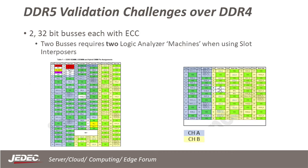There are many DDR5 validation challenges over DDR4. One of these challenges is the two 32-bit buses or subchannels versus a single 64-bit bus. From a logic analyzer perspective, this means that we need two clock domains or machines. So if we want to see traffic on both buses, we have to have one subchannel trigger the other subchannel. Each of these subchannels is on its own set of logic analyzer cards.